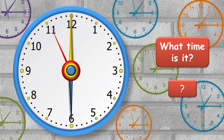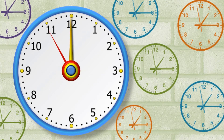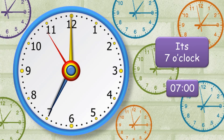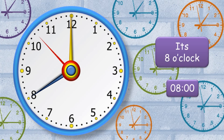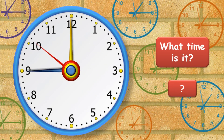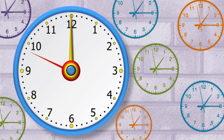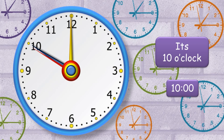What time is it? It's six o'clock. What time is it? It's seven o'clock. What time is it? It's eight o'clock. What time is it? It's nine o'clock. What time is it? It's ten o'clock.